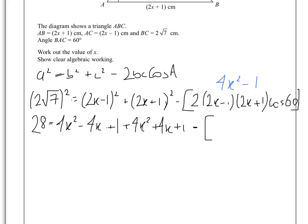so this bit here essentially will become 4x squared minus 1, and then that will multiply by 2, so we'll get 2 times by 4x squared minus 1, and cos 60, if you put it into your calculator, is in fact half. So that's what we're going to get.